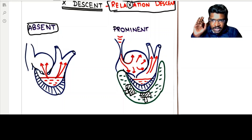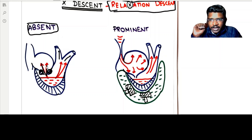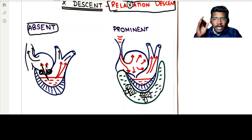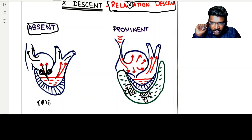Consider a condition where the tricuspid valve is perforated. When the right ventricle contracts and ejects blood into the right pulmonary artery, blood also enters the atrium. So the right atrium cannot relax, and at the same time this ejected blood will come and increase the pressure there. Can you find a fall in pressure? No — X descent will be absent completely. This is a case of tricuspid regurgitation.